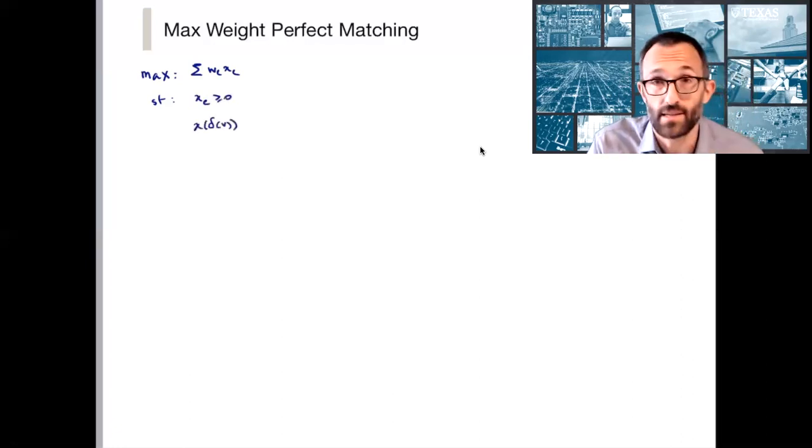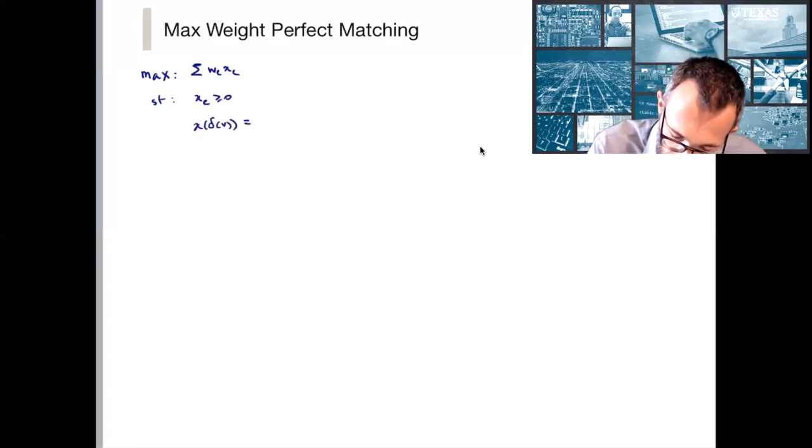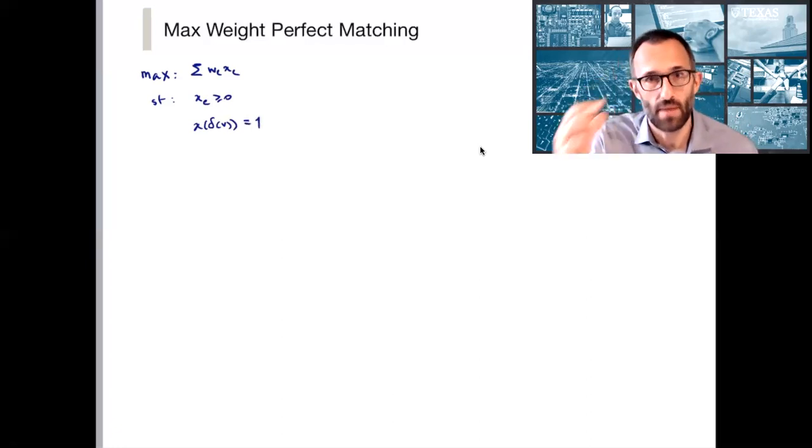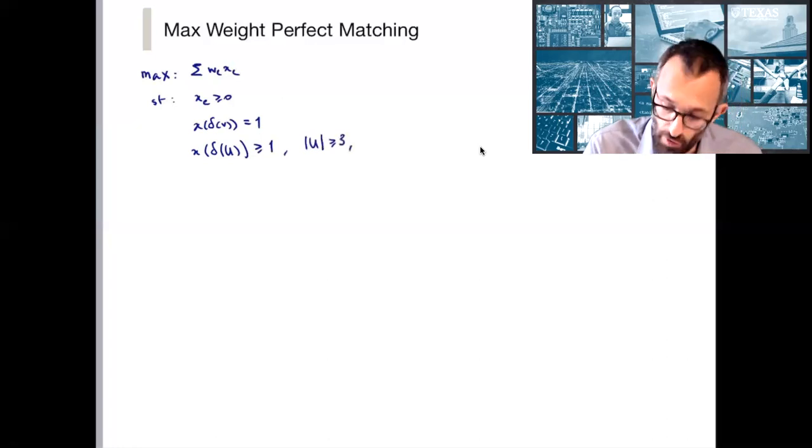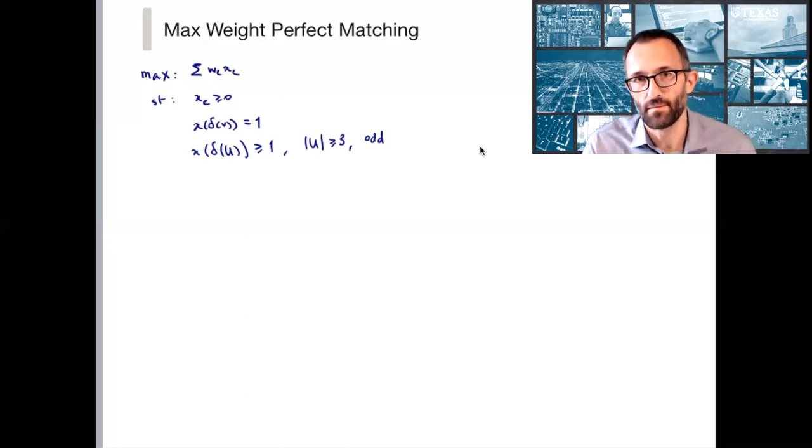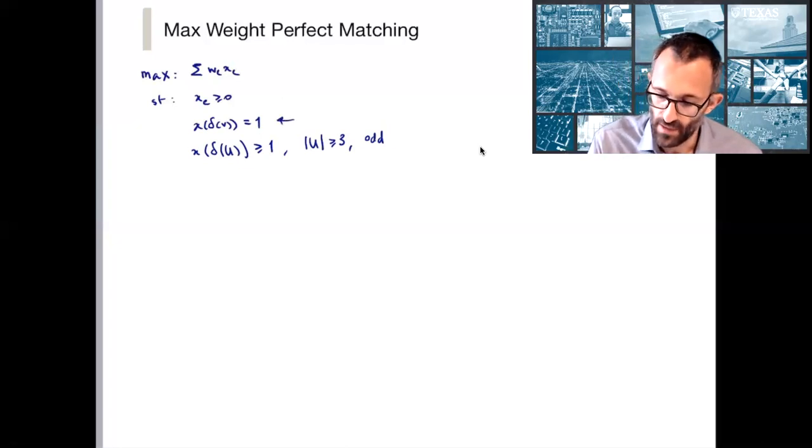We need of course non-negativity. We need for every vertex exactly one edge to be selected. If I turn this into less than or equal to one, then I would have the matching polytope. And x of delta of U is greater than or equal to one, again for every U of cardinality bigger than three and odd. Let me write as a side note that I'm going to assume throughout that the graph we're considering indeed has at least one perfect matching.